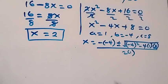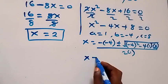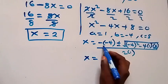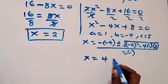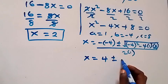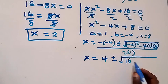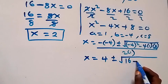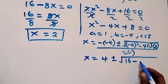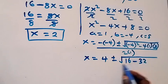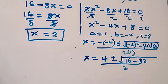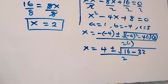Then x equals 4 plus or minus square root of: (minus 4) squared is 16, then minus 4 times 8 which is 32, all over 2. So 16 minus 32 gives us minus 16 under the square root.